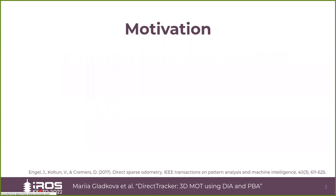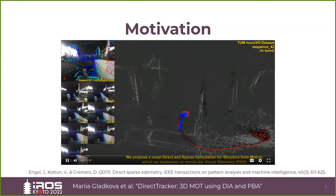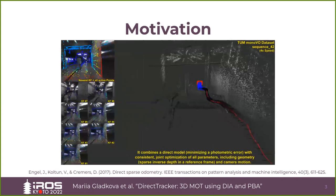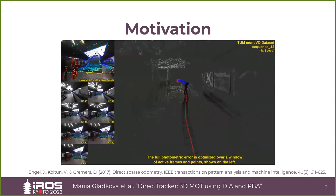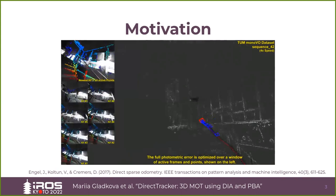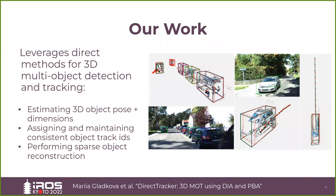At the same time, the field of Visual SLAM has seen a rapid development of robust and powerful systems. As a motivation for our work, we would like to mention a state-of-the-art camera tracking method, direct sparse odometry or DSO, which jointly localizes a moving camera and reconstructs a precise map of the environment. Our work is intended to leverage building blocks that have been successfully utilized for accurate camera localization in a direct setting for the task of multi-object tracking in an outdoor scenario.